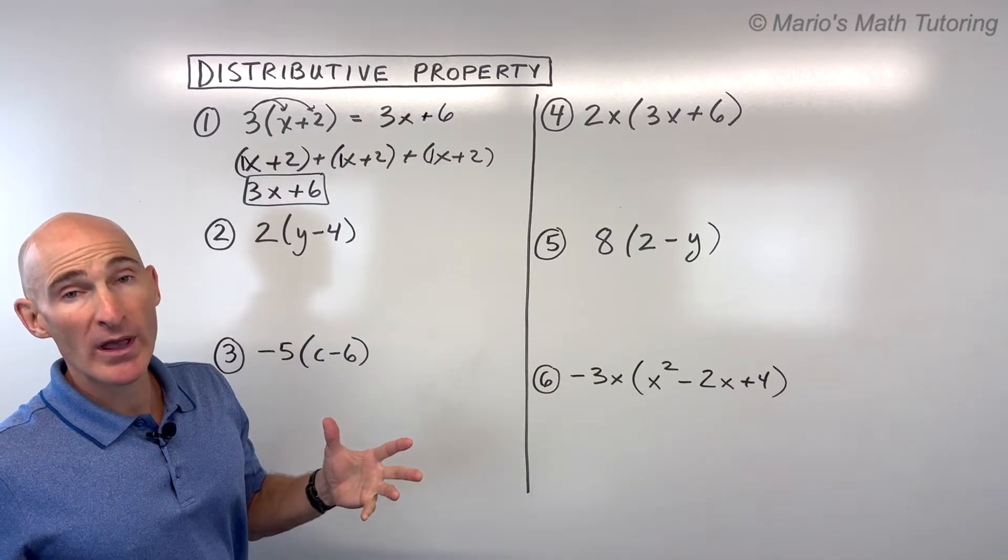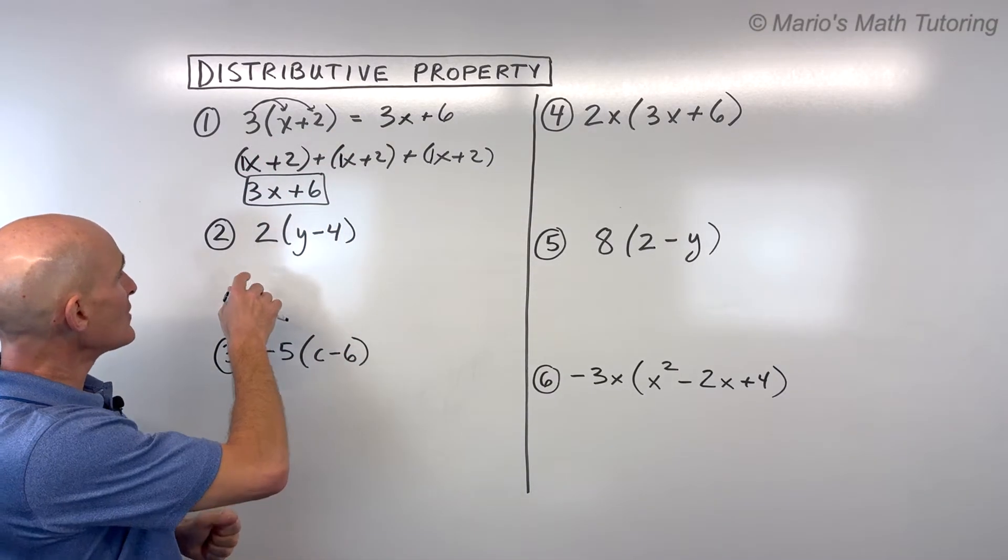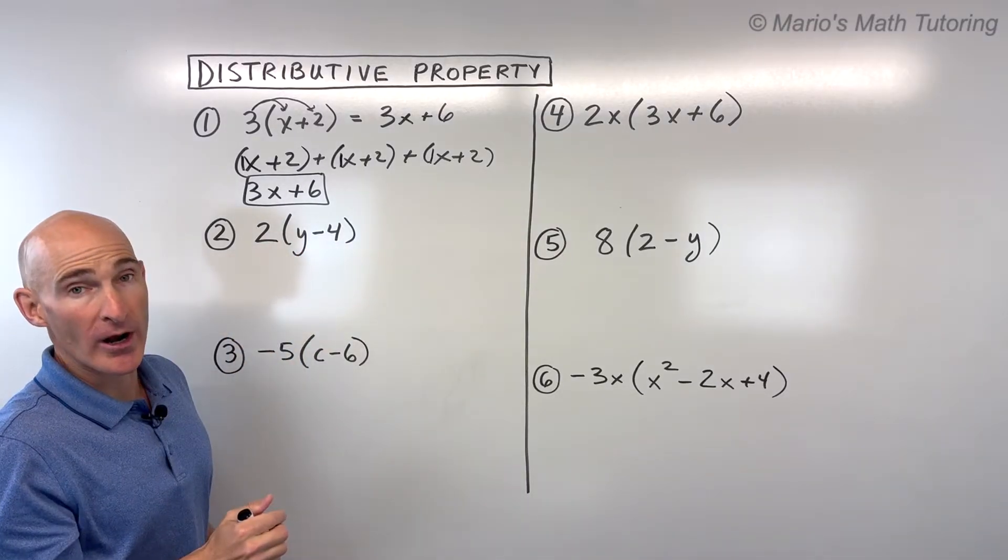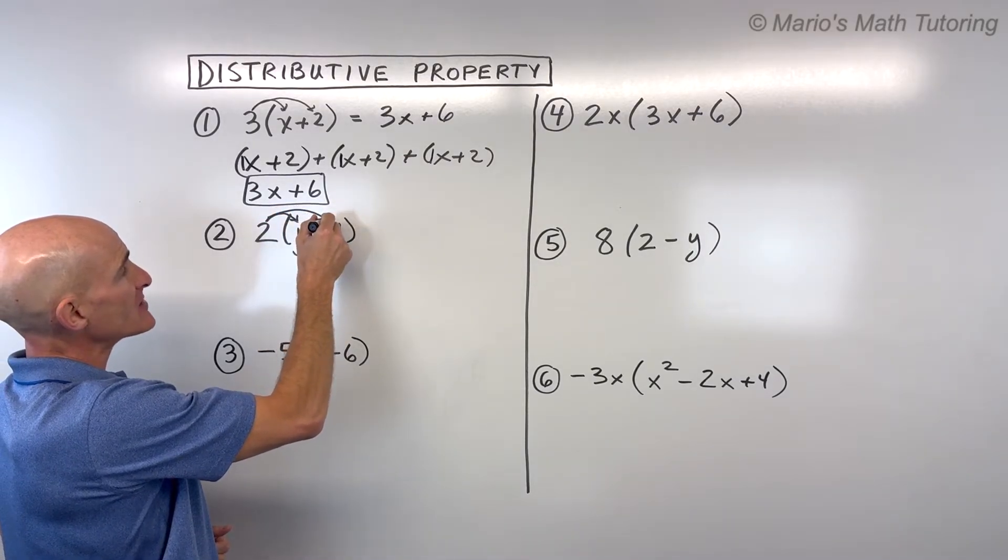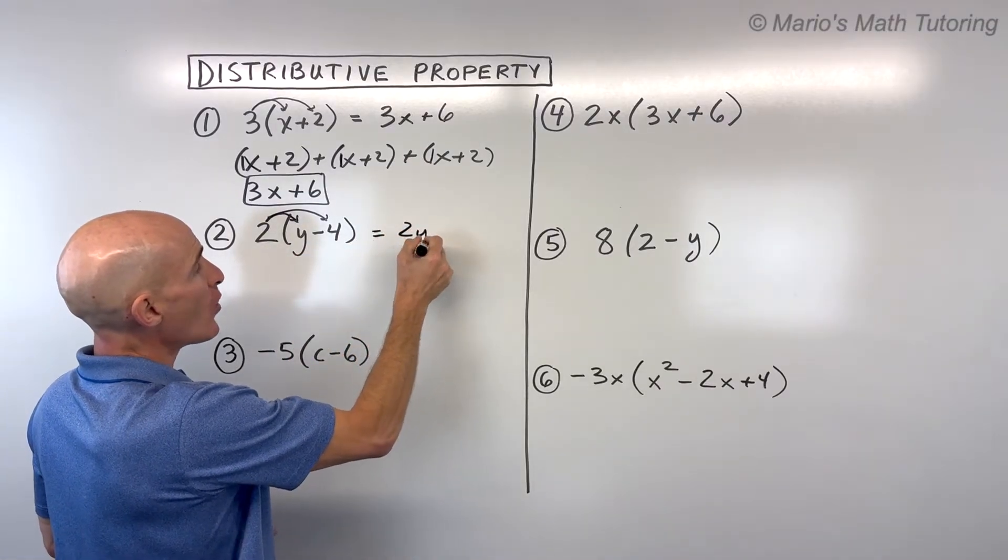Let's take a look at the next example. So here we have two times the quantity y minus four. So what you're going to want to do is distribute or multiply into the parentheses, like so.